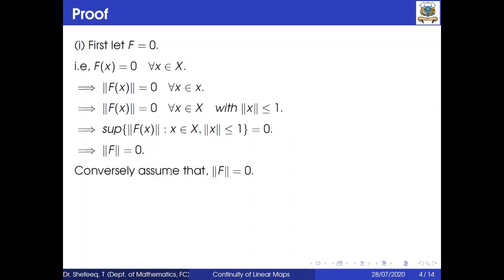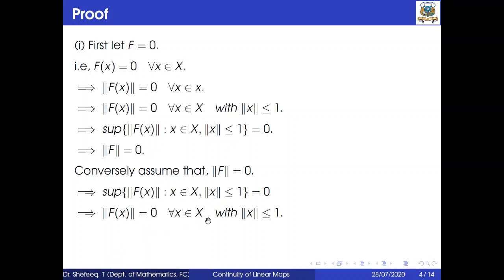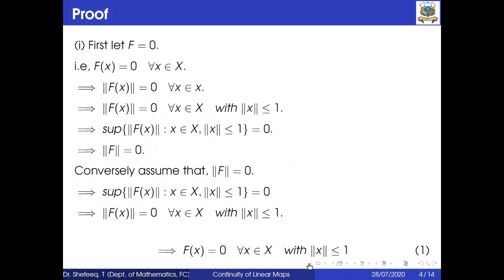Conversely, assume ||f|| = 0. By the definition of this norm, the supremum of ||f(x)|| such that x belongs to X with ||x|| ≤ 1 equals 0. This implies ||f(x)|| = 0 for all x in X with ||x|| ≤ 1, which in turn implies f(x) = 0 for all x with ||x|| ≤ 1. This is equation number 1. We have assumed ||f|| = 0 and we want to show f = 0.